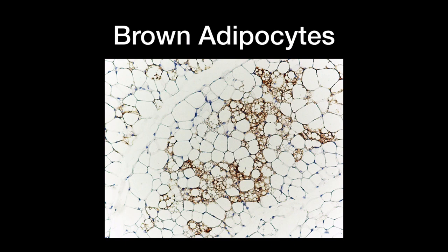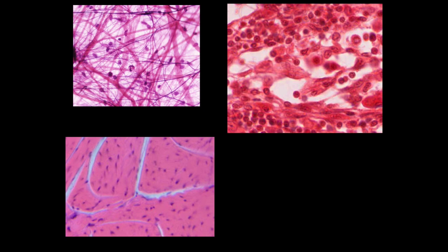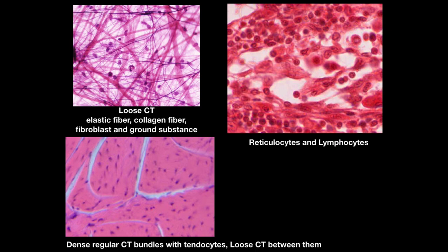That covers all the structures in connective tissue. As a challenge, three pictures of different types of connective tissue are shown — can you identify all the cells? The answer: the first shows loose connective tissue with thin elastic fibers running in all directions and thick collagen fibers with fibroblasts between them, and ground substance in the background. The second shows dense regular connective tissue bundles in a tendon with tendocytes, and loose connective tissue with fibroblasts between bundles. The third shows reticulocytes and lymphocytes in lymphatic tissue.